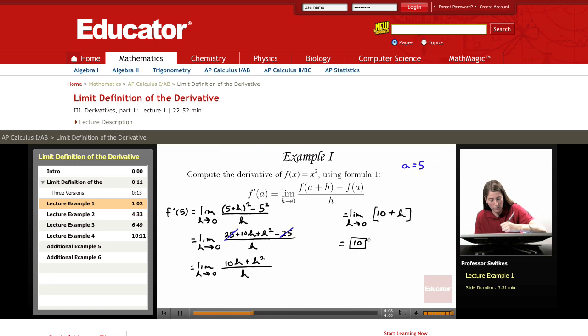And now we take the limit as h approaches 0 of 10 plus h and we get 10. And so our final conclusion here is that for the function f of x equals x squared, f prime of 5 is working out to 10. And again that is our final result here on this first example.